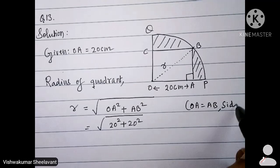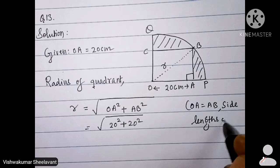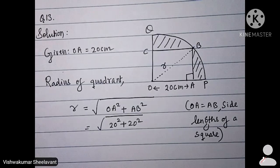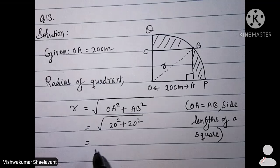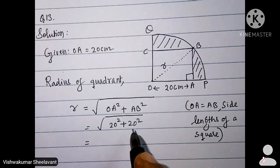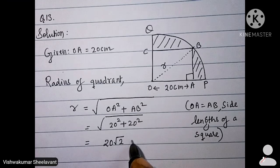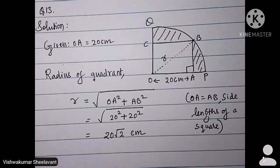Side lengths of a square. Therefore both are equal to 20 cm. So what do you get? 2 times 20 square, or you get 20 root 2 cm.